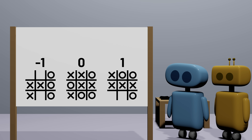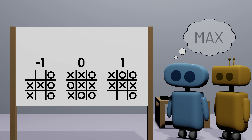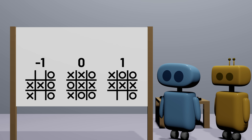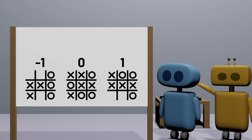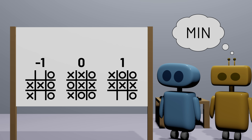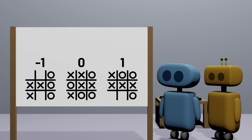As a result of assigning values to each terminal state, we can give each player a mathematical goal. The X player, who we'll start calling the max player, has the goal of maximizing the score — ideally winning with a score of 1, but if that's not possible, a tie with a score of 0 is better than losing with a score of negative 1. Meanwhile, the O player, who we'll start calling the min player, has the goal of minimizing the score. They want O to win, but if that's not possible, a tie is better than X winning.